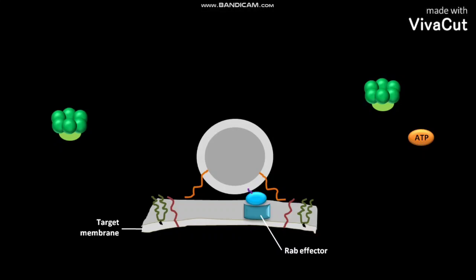As a result, the transport vesicle is docked on the target membrane. The VAMP is incorporated into the secretory vesicle as it buds from the trans-Golgi network. The VAMP is a v-SNARE.